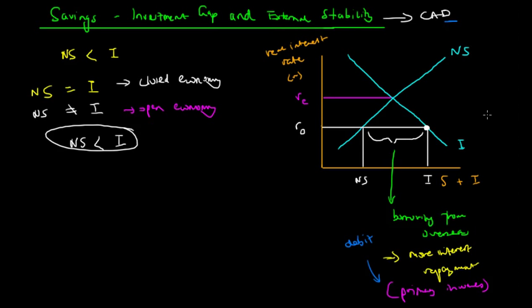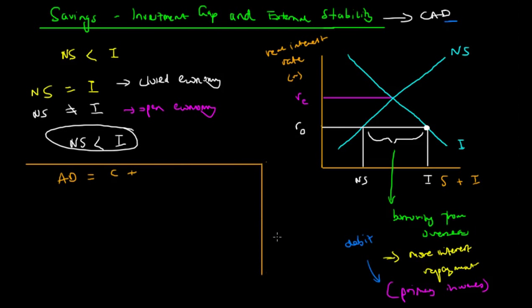Another way to look at this is through a mathematical approach. We know that aggregate demand equals C plus I plus G plus net exports, where net exports is simply exports minus imports, which we'll denote as NX for simplicity.